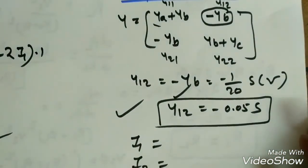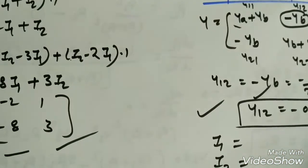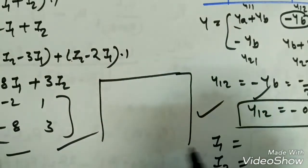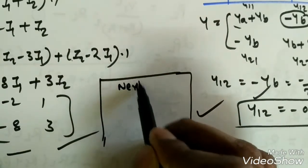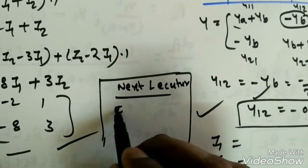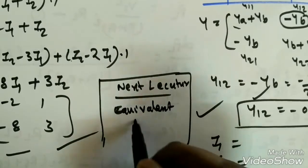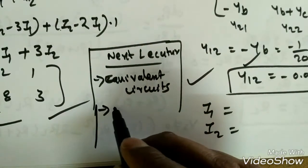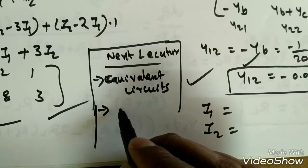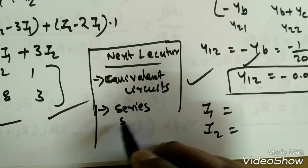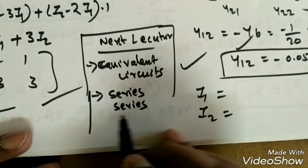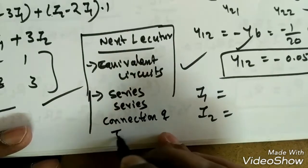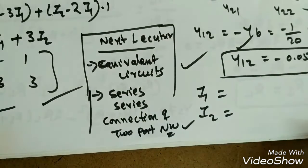That covers several previous GATE questions on two-port parameters. Try solving the remaining GATE questions; post a comment if you have any problems. In the next lecture, we will see equivalent circuits for impedance and hybrid parameters, and also connections of two-port networks — series-series, Z-matrix or Y-matrix connected in series or parallel.